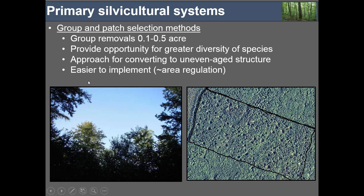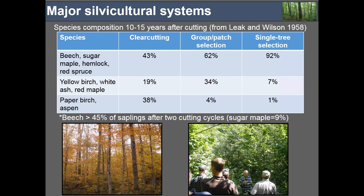Looking at long-term results from Bill Leak's work at the Bartlett Experimental Forest: after one cutting cycle of single tree selection, the vast majority of regeneration was shade-tolerant, with an increasing proportion of beech over time. With group selection, there's still a high shade-tolerant component but a much larger mid-tolerant component. Moving to clear-cutting, the proportion of intolerant species like paper birch and aspen increases, while some tolerant component is still maintained since many species rely on advanced regeneration already present on site.